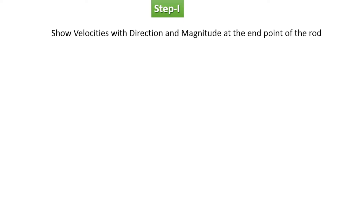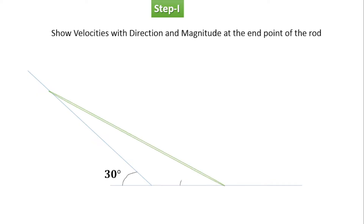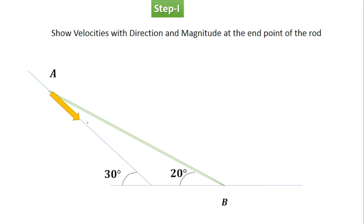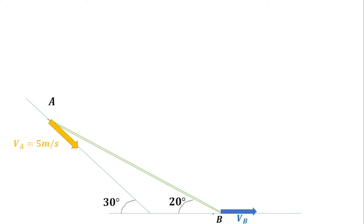Step one: show velocities with direction and magnitude at the endpoints of the rod. The inclined plane has a 30-degree angle, and the rod AB is at 20 degrees with the horizontal. At point A, the rod slides down along the inclined plane, so the velocity Va is represented along the inclined plane — its value is 5 meters per second. The velocity of point B is along the horizontal plane, so Vb is along the horizontal. The value of Vb is unknown and is to be calculated.